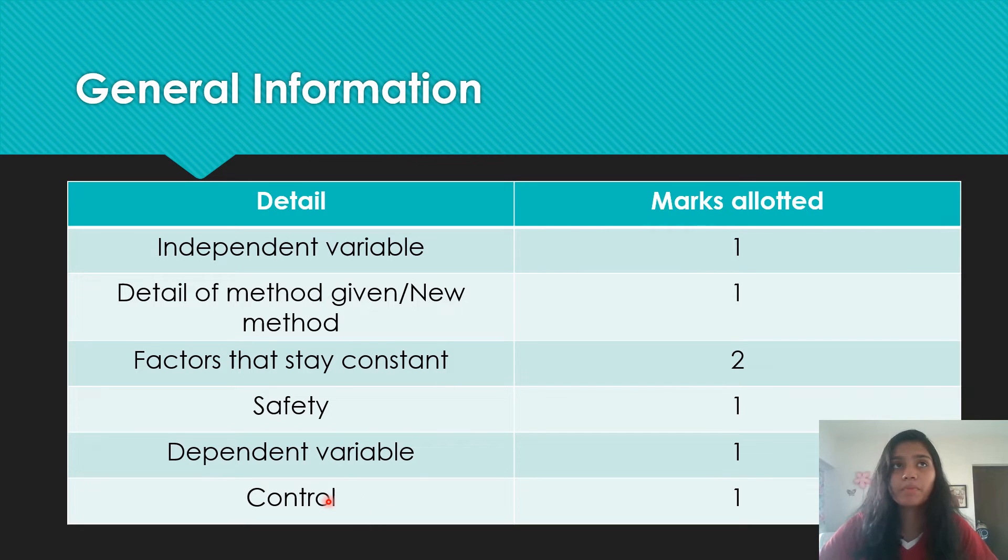So factors that stay constant are those like temperature and pH that have to have the same value in every setup of the experiment. And control is basically an experiment setup to test whether the variable being tested is the only reason that causes a difference in results. So if you're investigating the effect of temperature on transpiration, a control setup would be a plant not kept in heat.